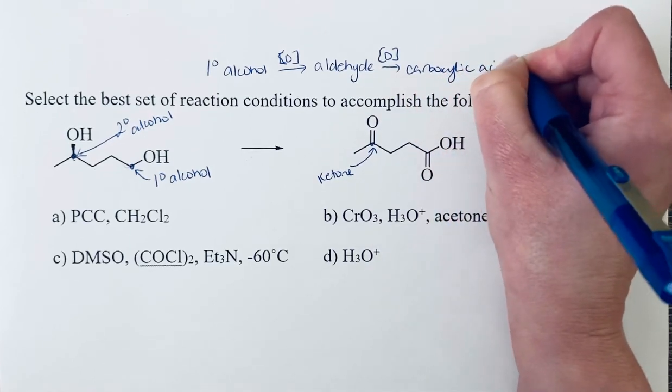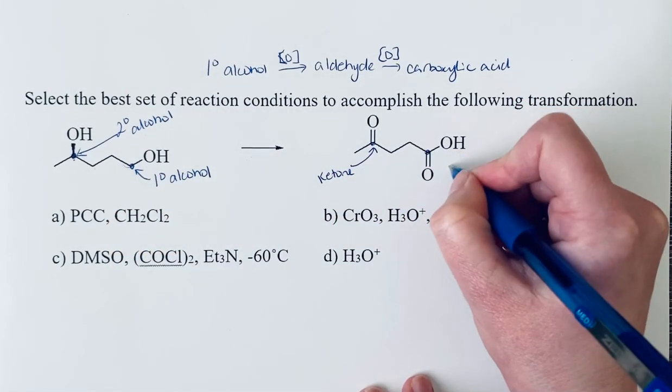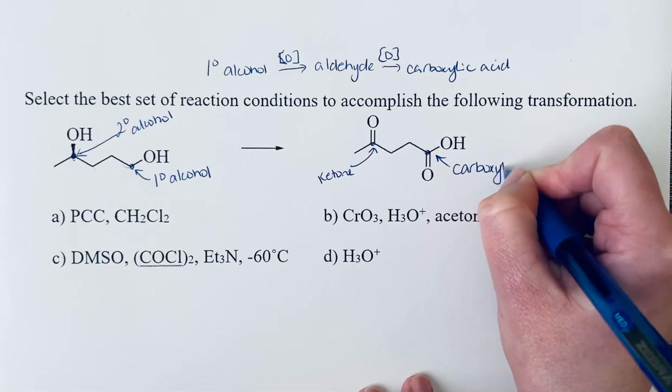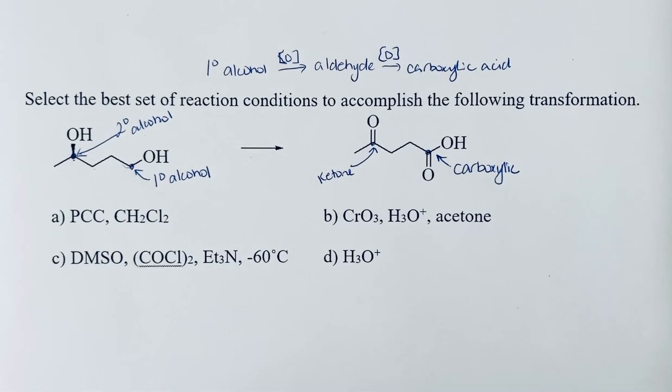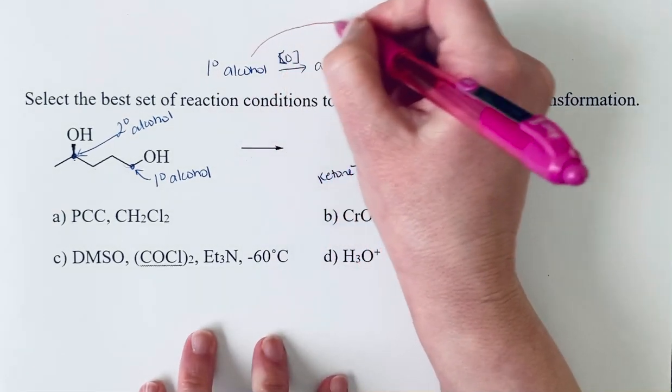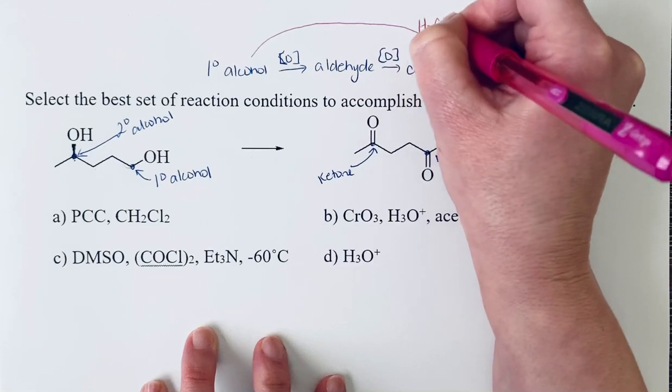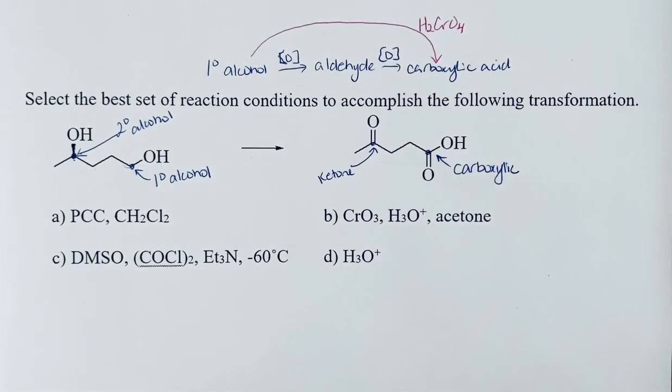We want to see what's happening here, so our primary alcohol is here at the end, and we can see that's been oxidized to a carboxylic acid. Out of the reaction conditions that you have been introduced to so far, the only one that we saw that will take a primary alcohol and oxidize it all the way to a carboxylic acid are conditions that form chromic acid.